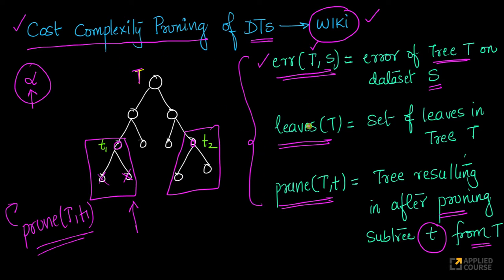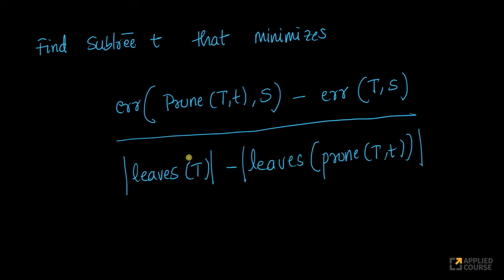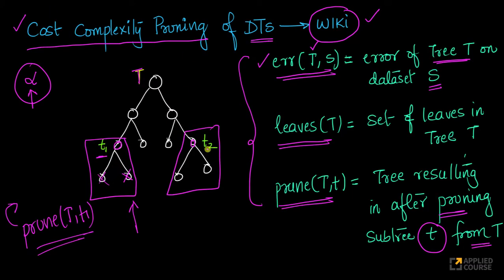Now, it's very simple, cost complexity pruning. If when you have to choose between t1 and t2, it's actually very simple. So, the equation from Wikipedia, I've just copied it as is, I'll explain this and break it for you. The objective here is, in this case, what do we have? We have two subtrees because often pruning happens bottom up.